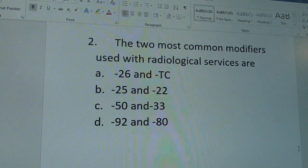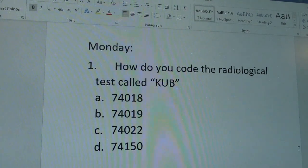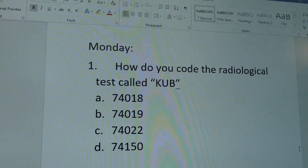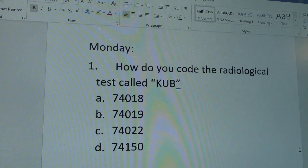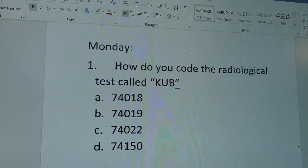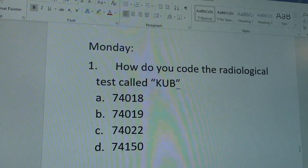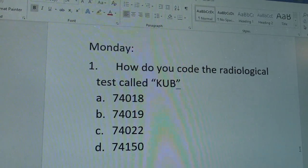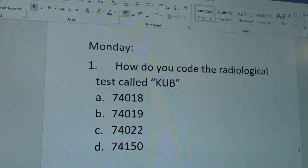Your two questions for today. How do you code the radiological test called K-U-B? Is it 74018, 74019, 74022, or 74150?